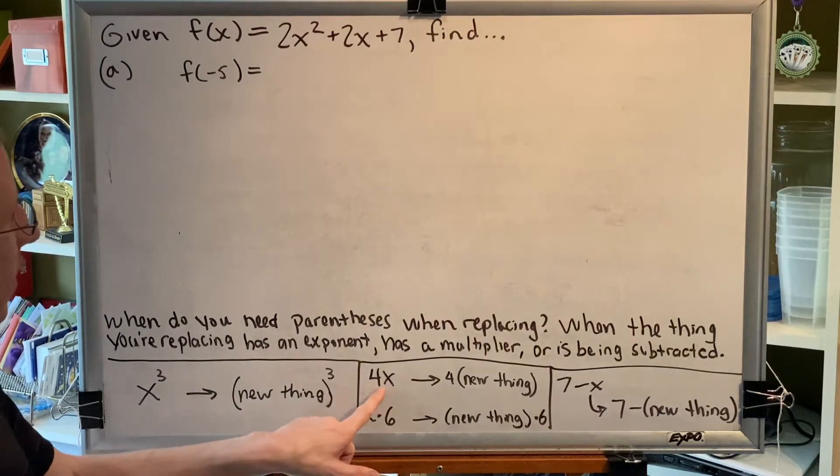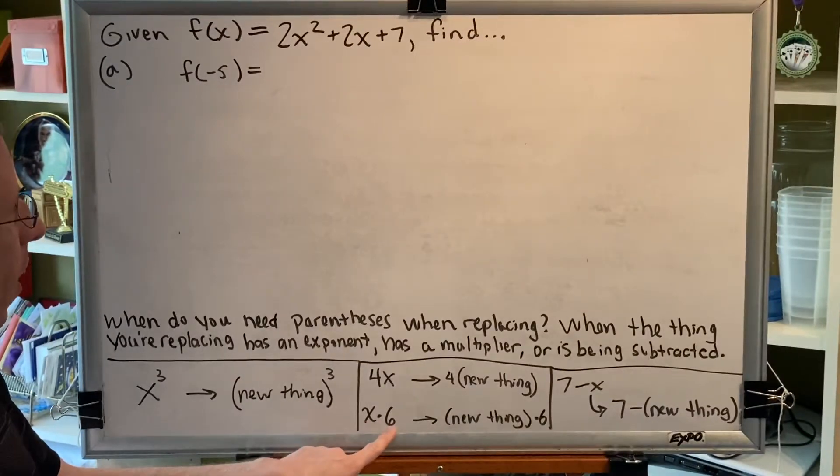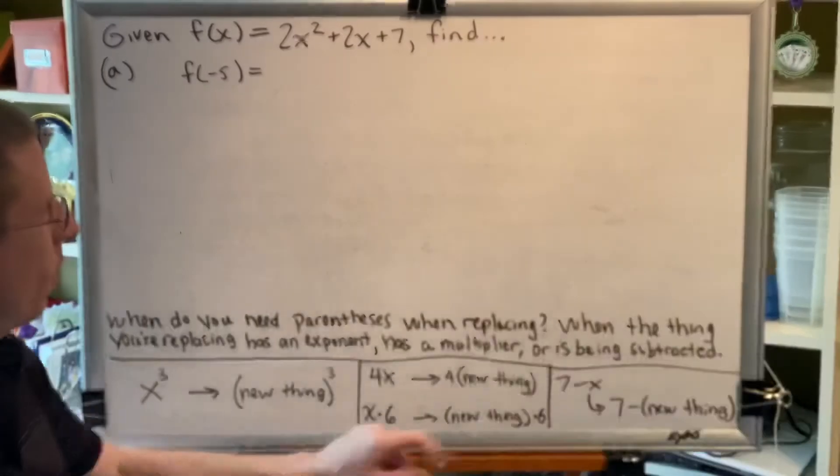well, this x has a multiplier, 4. This x has a multiplier, 6. So the new thing must be put in parentheses.